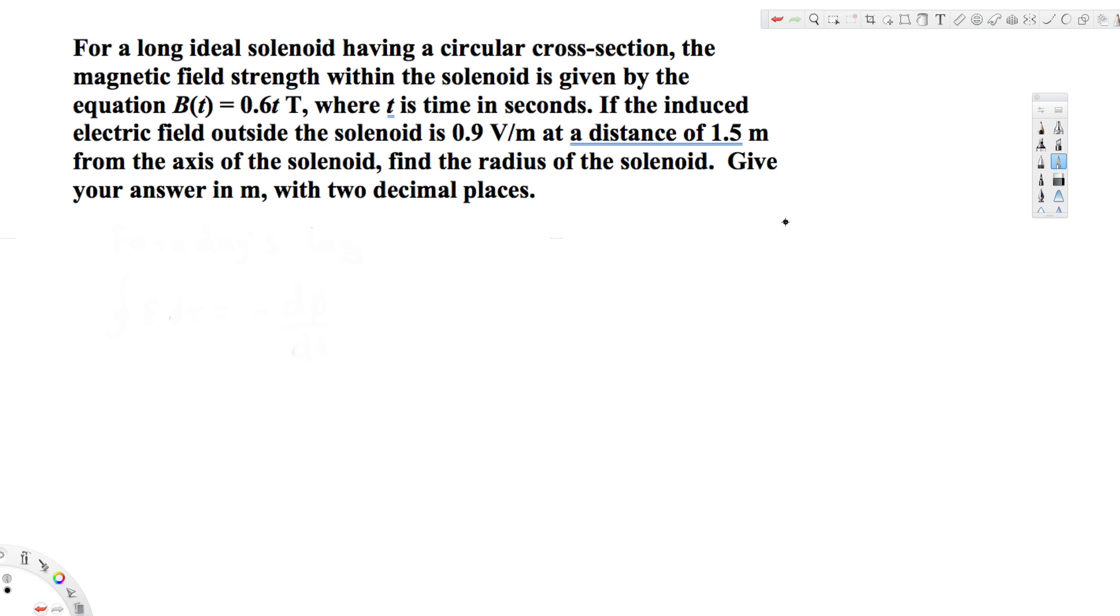This question is asking for a long ideal solenoid having a circular cross section, the magnetic field strength within the solenoid is given by the equation B(t) = 0.6t Tesla, where t is time in seconds. If the induced electric field outside the solenoid is 0.9 volts per meter at a distance of 1.5 meters from the axis of the solenoid, find the radius of the solenoid.